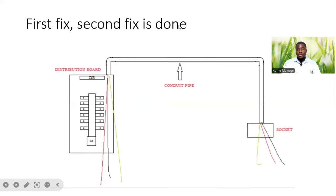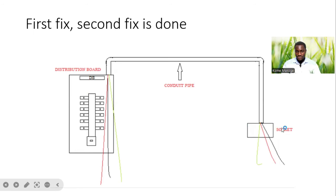First fix and second fix should be done before carrying out the test. For example, we have our DB on one side and our socket outlet on the other. Since we are still under construction, we will have our back box installed. We have our conduit or GI conduits installed, and then we pull our wires from the DB side coming to the socket outlet.